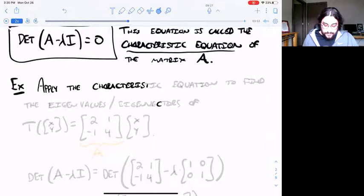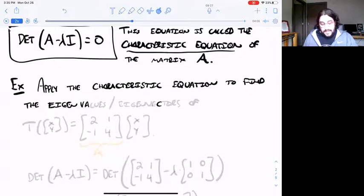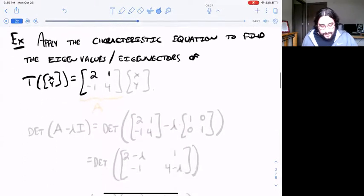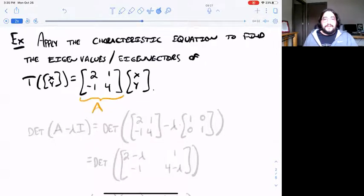So now I want to start with that linear transformation T that we had before and apply the characteristic equation determinants to find the eigenvectors and eigenvalues of that linear transformation. So here we're just given the linear transformation, no prior knowledge about the eigenvectors.